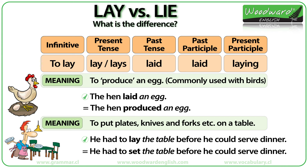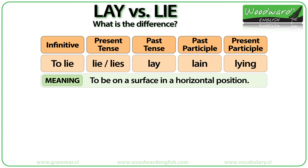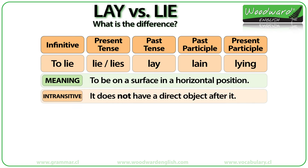Now let's look at the verb TO LIE. Here is the conjugation of the verb TO LIE. LIE means to be on a surface in a horizontal position, usually resting. LIE is an intransitive verb — this means it never has a direct object or a thing after it. You cannot lie a thing; you LAY a thing.